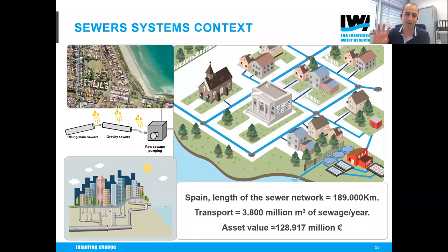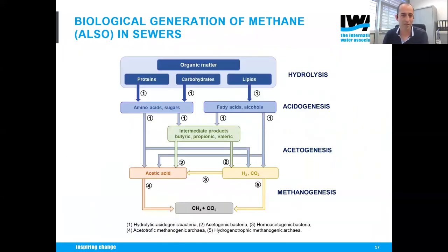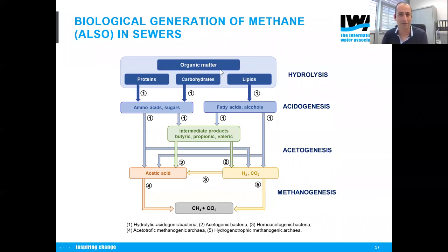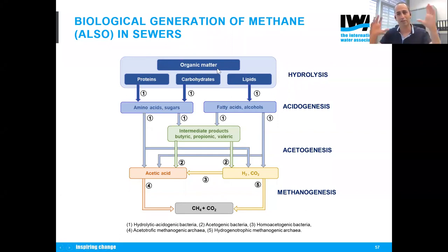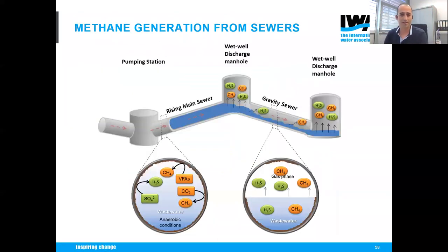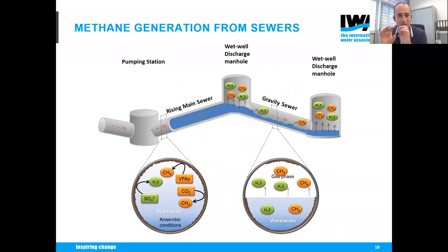In some sections of sewer systems, anaerobic conditions can prevail, and biological reactions transform organic matter in the wastewater into biogas — ultimately methane and CO2. This methane production is also linked with sulfate reduction to sulfide (H2S), and these two biological communities help each other simultaneously produce these compounds.